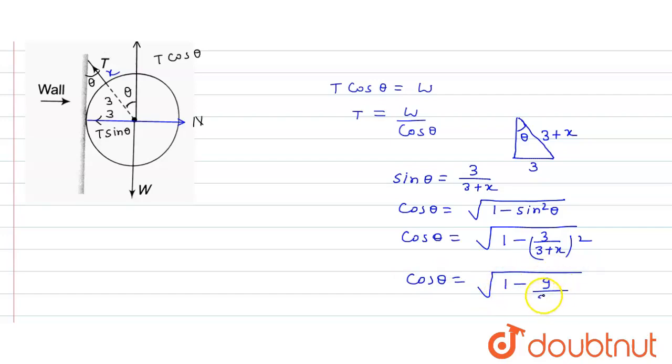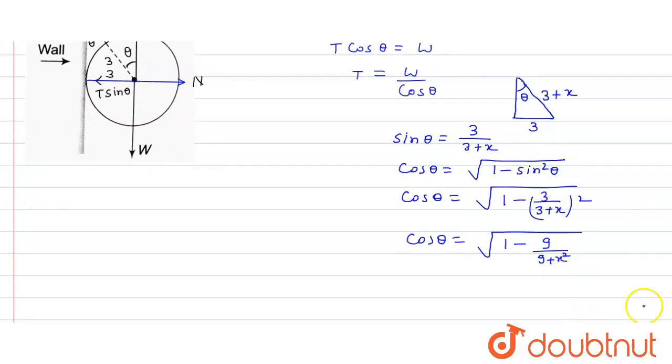From here, tension T is equal to W upon under root of 1 minus 9 upon 9 plus x squared. So this will be the value of tension. Thank you.